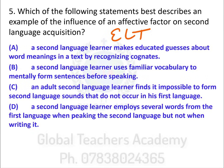In other words: what is the most important factor when somebody is trying to acquire a second language? Options: A — a second language learner makes educated guesses about word meanings by recognizing cognates. B — a second language learner uses familiar vocabulary to mentally form sentences before speaking. C — an adult second language learner finds it impossible to form second language sounds that do not occur in his first language. D — a second language learner employs several words from the first language when speaking the second language, but not when writing it.